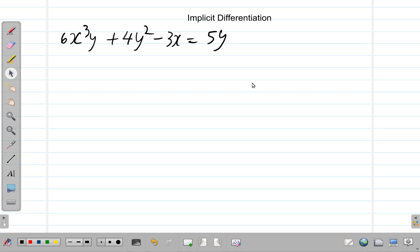Let us use implicit differentiation to differentiate this function here. Now, using the rules of implicit differentiation, you have, well, this is a product. So, let's use product rule.